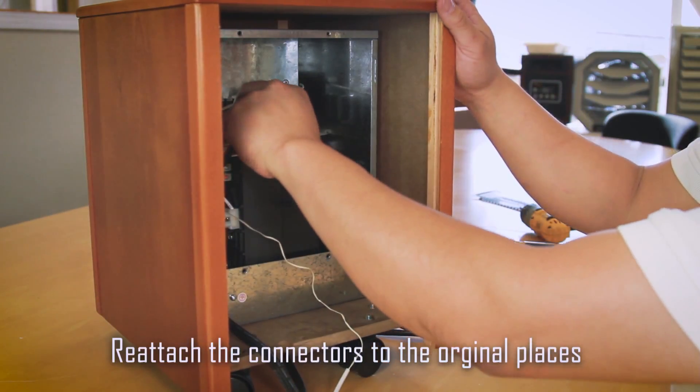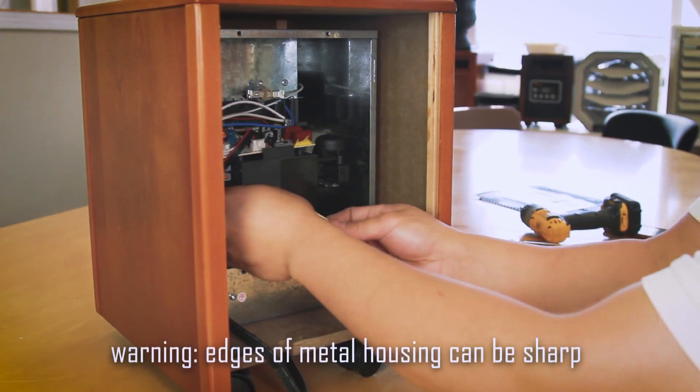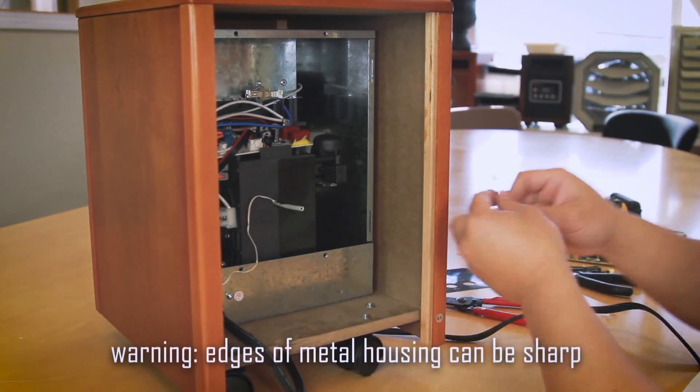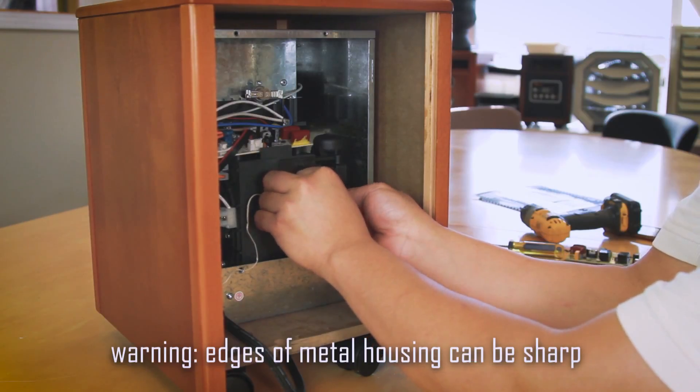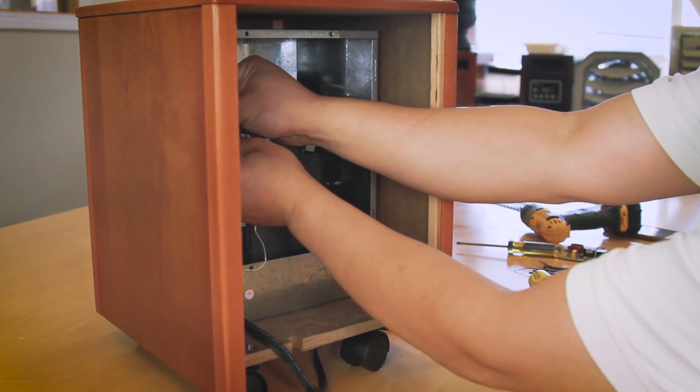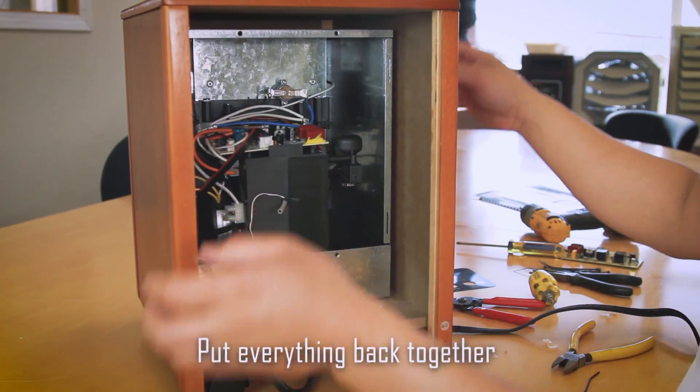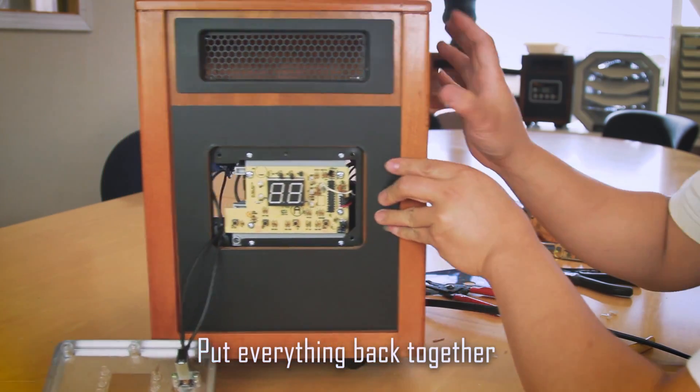Take your two wires and plug them back to the proper places. Use plastic to reattach the connectors to where they belong. Now reassemble your heater in reverse order of the way you disassembled it.